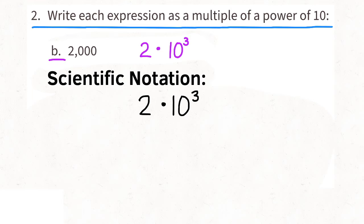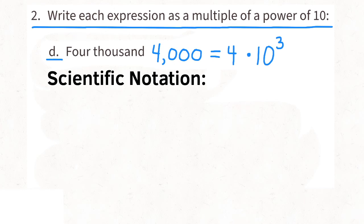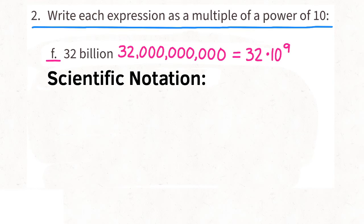B: 2 times 10 to the third is already written in scientific notation. C: 92 times 10 to the power of 5 — in scientific notation we write that as 9.2 times 10 to the power of 6, since moving the decimal one place to the left increases the exponent by one. D: 4 times 10 to the power of 3 is already in scientific notation. E: 8 times 10 to the power of 7 is also already in scientific notation. F: 32 times 10 to the power of 9 — moving the decimal one place left gives 3.2 times 10 to the power of 10.